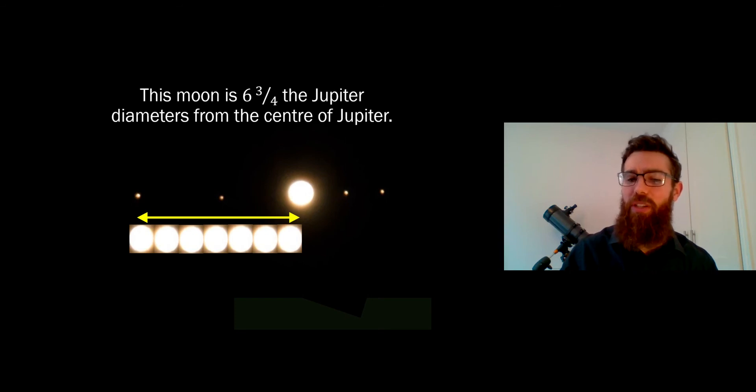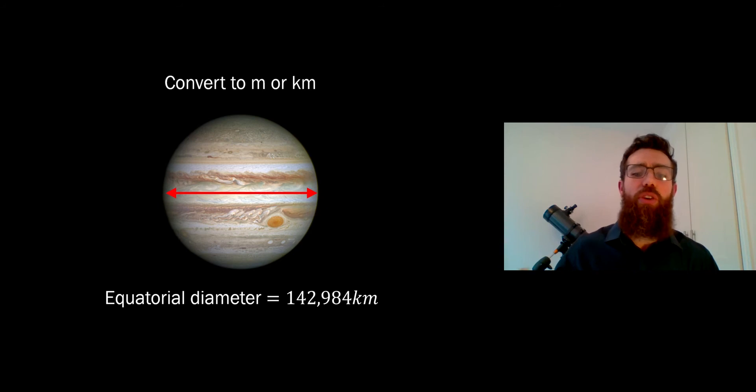Then you can convert to an actual distance. We know that the equatorial diameter of Jupiter is 142,984 kilometers. We can actually times that 6.75 Jupiter diameters by its equatorial diameter and then we'll get an actual distance in kilometers where that moon would be from Jupiter.